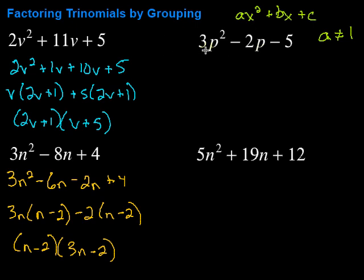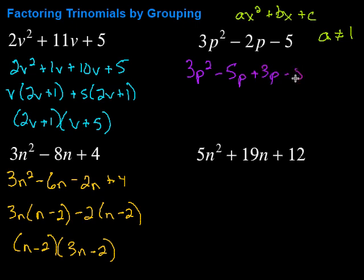Let's try this next one. In this case we're going to take three times five, which is fifteen, but since this is minus, we want factors that have a difference of two. Factors of fifteen that have a difference of two would be five and three. I want to end up with a minus two P, so I'm going to break the middle term into minus five P plus three P. Those combine back to that minus two P.